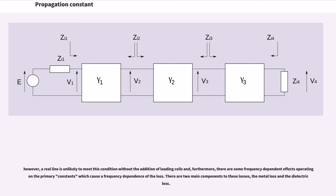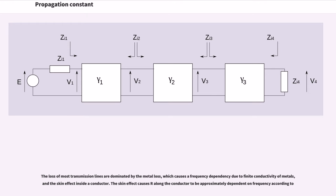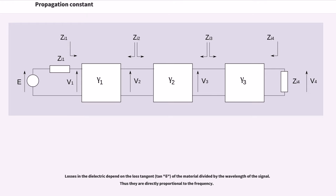Furthermore, there are some frequency dependent effects operating in the primary constants which cause a frequency dependence of the loss. There are two main components to these losses, the metal loss and the dielectric loss. The loss of most transmission lines are dominated by the metal loss, which causes a frequency dependency due to finite conductivity of metals and the skin effect inside a conductor. The skin effect causes R along the conductor to be approximately dependent on frequency according to R ~ sqrt(f).